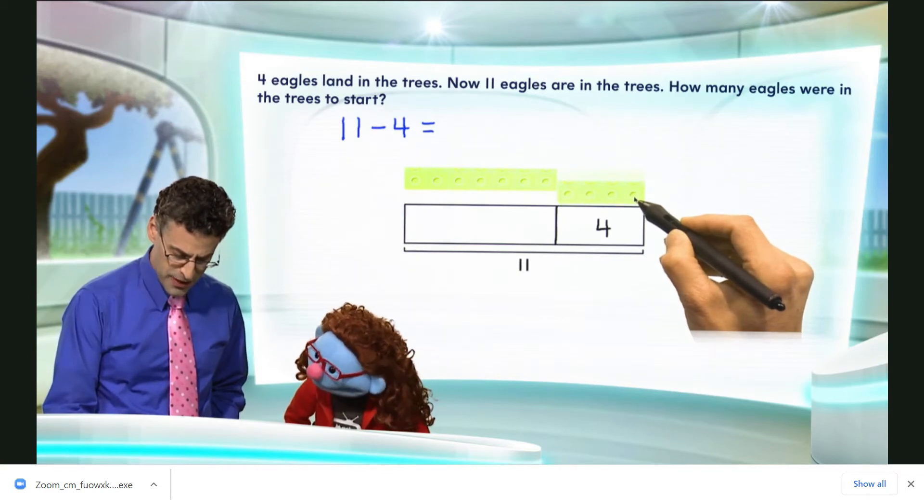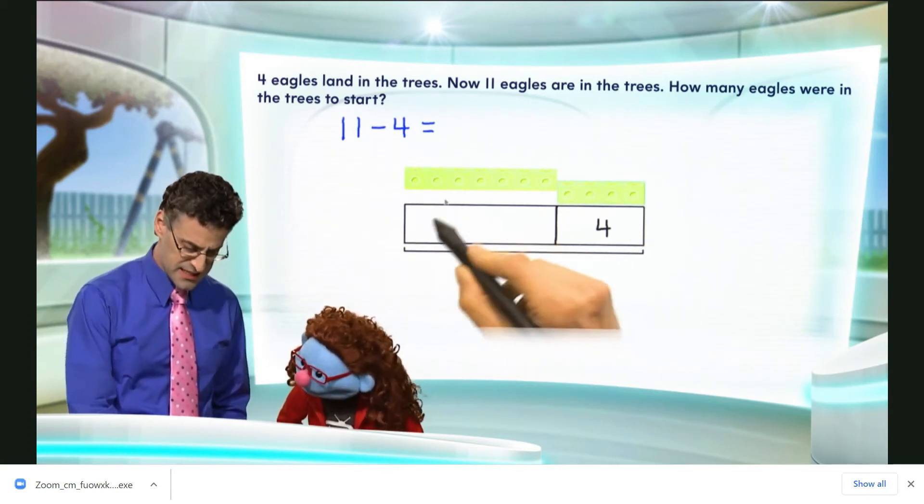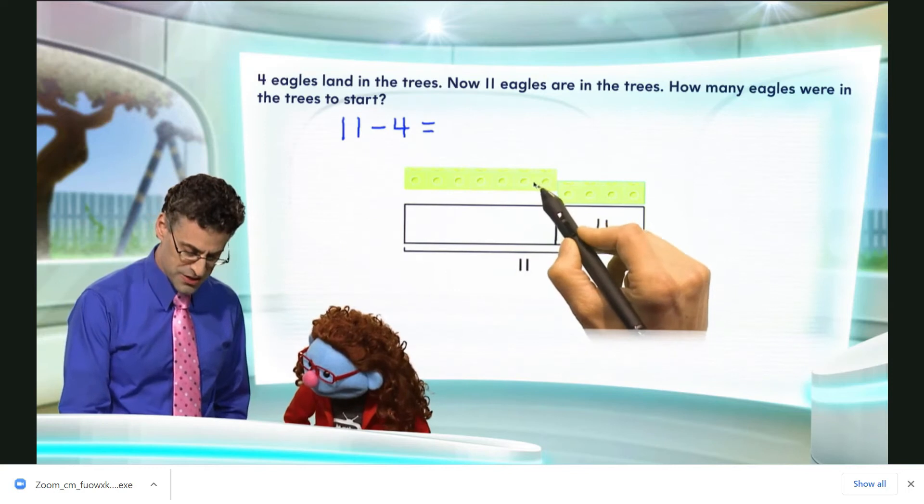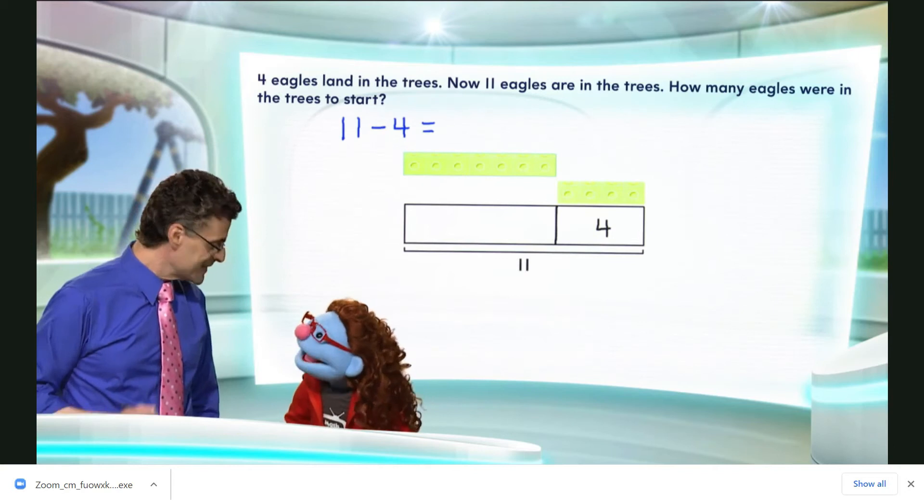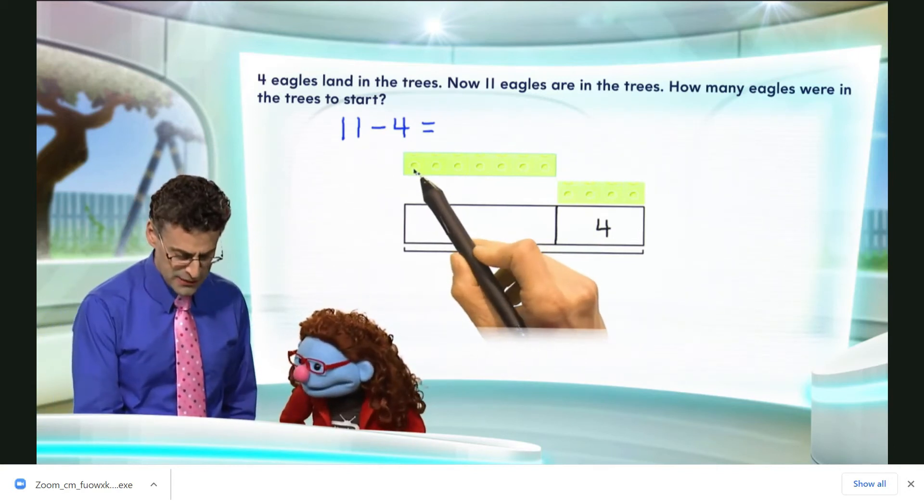Oh, there they are! So the remaining ones, this quantity here, which is right here, that represents the ones that we must have had at the start. Oh, so we should count, though! Exactly, and if I do that, let's see what we get.